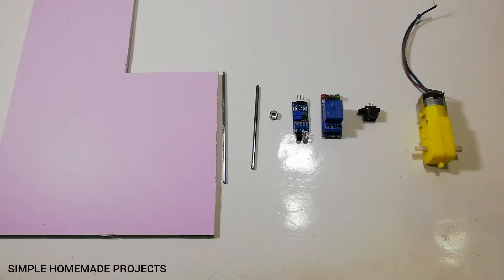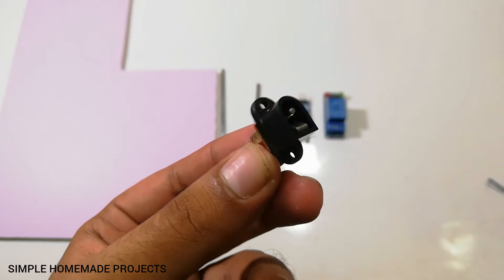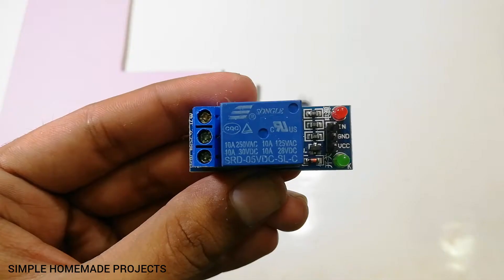Assalamu alaikum friends, welcome to Simple Homemade Projects. To make this smart soldering dispenser, we need a 5 volts DC gear motor, DC jack, and relay module.